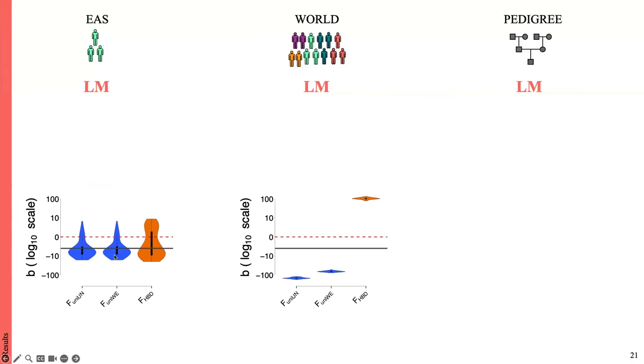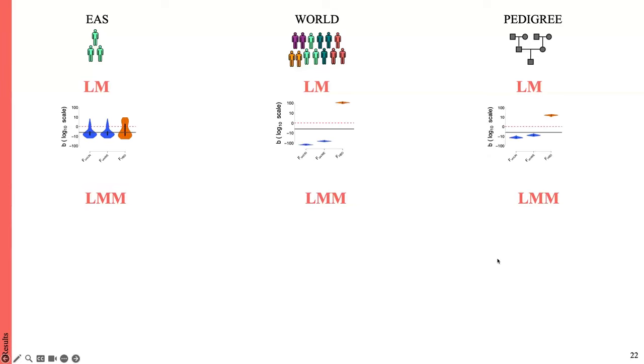However, as soon as we add structure, we can see that none of the inbreeding coefficients can accurately estimate inbreeding depression. We are very far from this line. And the results are less dramatic, but still wrong with the weaker familial structure.